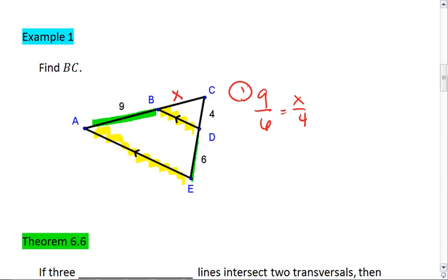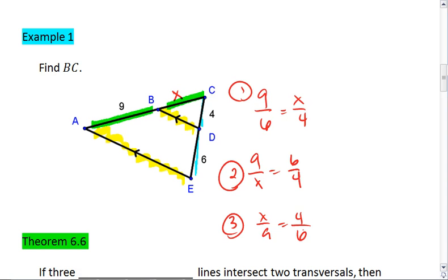This tells us that 9 to 6 is equal to X to 4. That's one way you could write this proportion. You could also write it that 9 to X is equal to 6 to 4. Or you can flip it, you could write X to 9 equals 4 to 6. Any of these will give you the same answer. What you should get is that X equals 6. Thus BC has a length of 6.